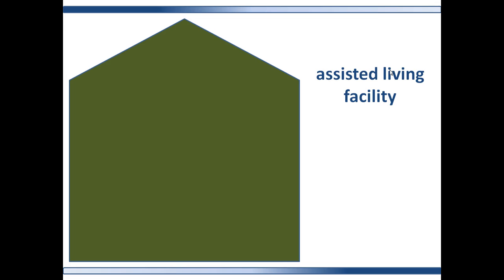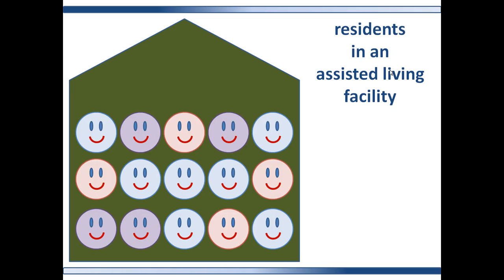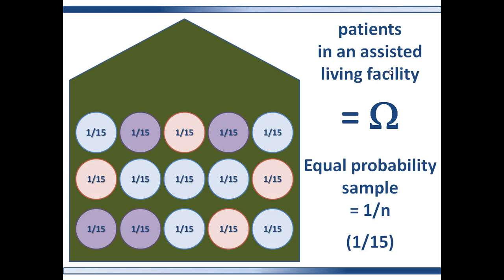Let's do a healthcare example of equal probability sampling. This is an assisted living facility with 15 residents — this is our outcome set, and each patient is an outcome. We want a sample of patients to fill out a satisfaction survey. Our strategy is a random name generator, and since all residents are willing to participate, there are no obstacles. So there is an equal probability of getting any patient, and for each patient the probability measure p equals 1 over 15. For all equal probability samples, each element in the outcome set has the same probability measure, 1 over n, which means each unit set in the event set has the same probability measure 1/n.